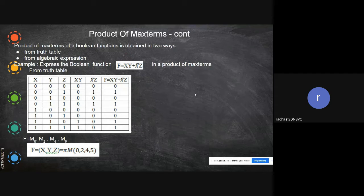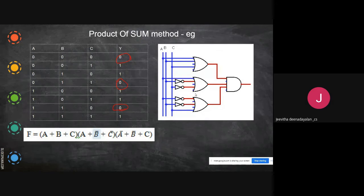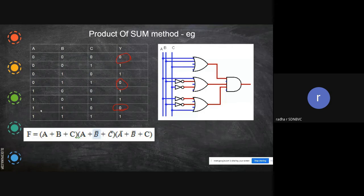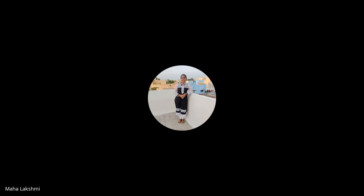I have given many PowerPoint explanations and video examples so that you can follow. A student raised a doubt: how did you find the combinations, and how did you find the numbers at the bottom?